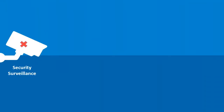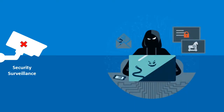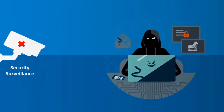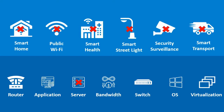For example, if IP cameras are not working, it may lead to a drastic increase in criminal activity. If any server in a data center goes down, it may affect the entire smart city and its offerings.